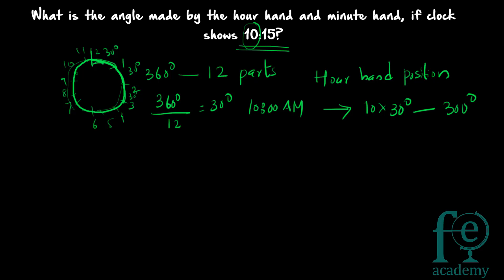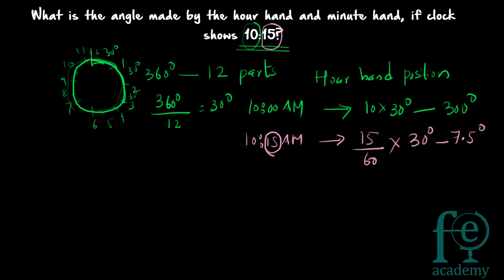But at 10:15, there are 15 more minutes. So you also need to find the angle made by those 15 minutes. Since 1 hour makes 30 degrees, 15 minutes makes 15/60 × 30 = 7.5 degrees. So the total position of the hour hand at 10:15 is 300 + 7.5 = 307.5 degrees.